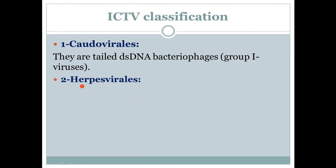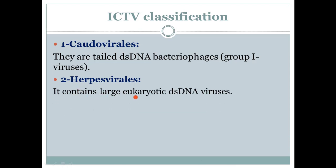The second order is Herpesvirales. 'Herpes' means creep or crawl. Herpesvirales contains large eukaryotic double-stranded DNA viruses. Their members are eukaryotic viruses — meaning they infect organisms having a membrane-bound nucleus — and they possess double-stranded DNA.